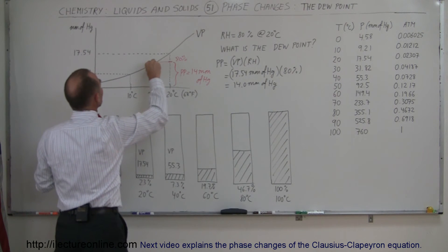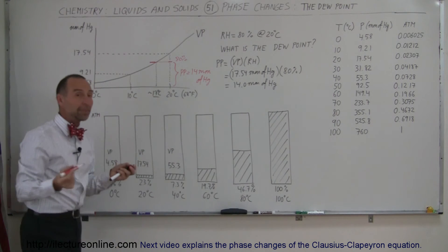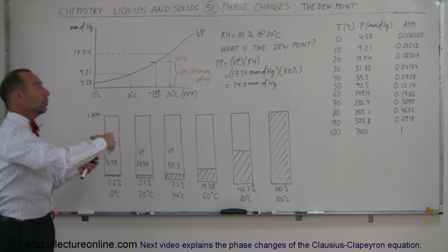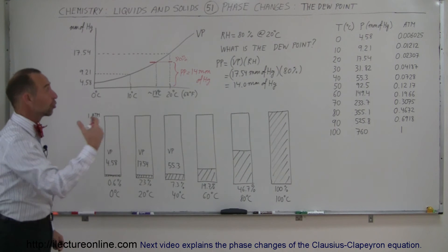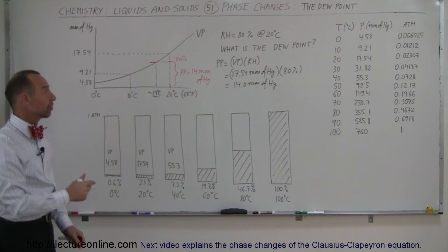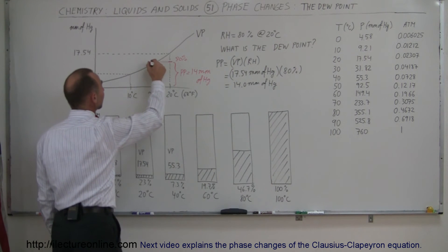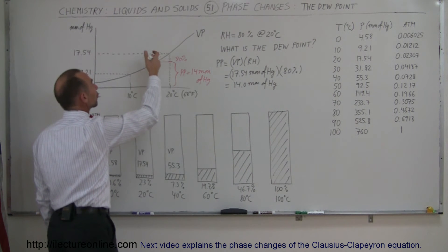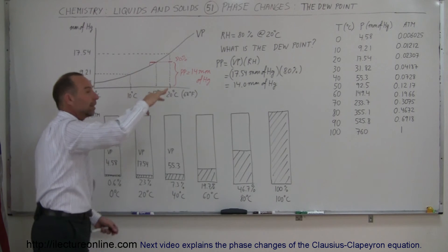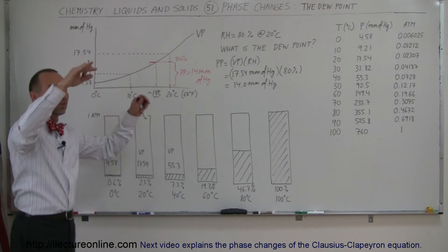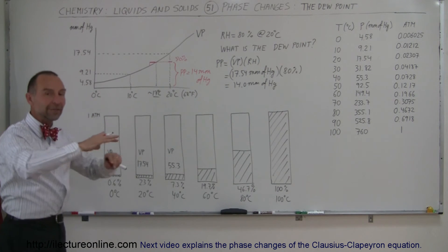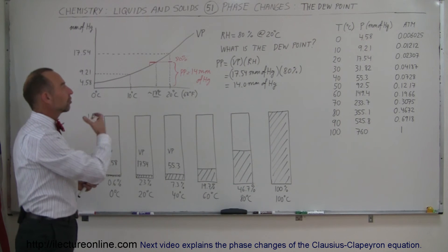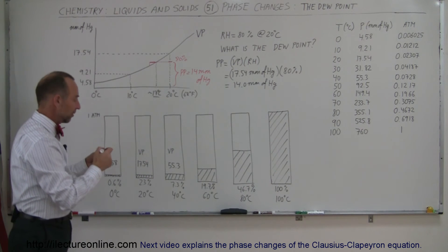The partial pressure is now greater than the vapor pressure, which can never happen. You can never have more moisture in the air than the air can hold — you can never have a partial pressure greater than the vapor pressure. So this additional difference simply means that the water begins to condense and turns from water vapor into moisture, and little droplets form or everything on the surface begins to get wet. That's simply the extra moisture in the air beginning to condense out.